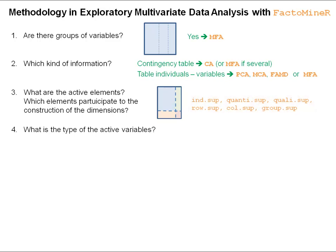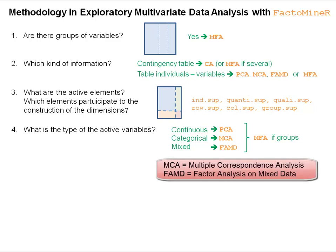Another question is: what is the type of the active variables? Whatever the method in FactoMineR, we can perform a principal component analysis with both continuous and categorical variables. However, for PCA specifically, the active variables must be continuous — we need continuous variables to perform PCA, and then supplementary variables can be continuous or categorical. If all active variables are categorical, we perform multiple correspondence analysis. If the active variables include both continuous and categorical variables, we perform a factorial analysis on mixed data.